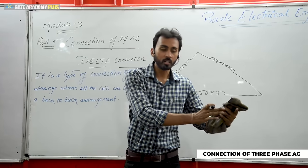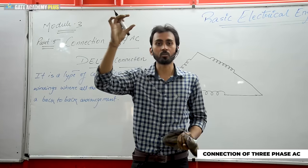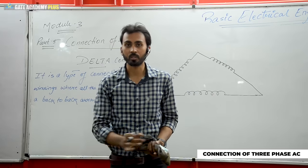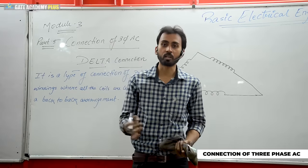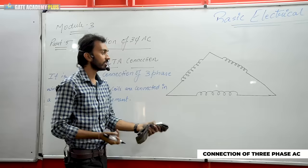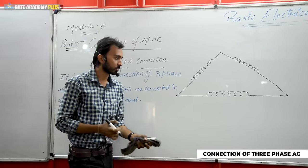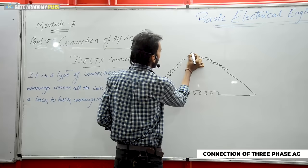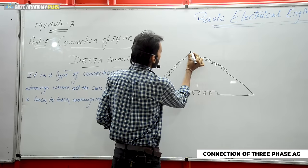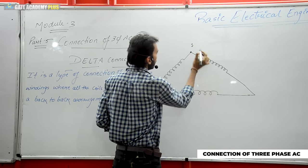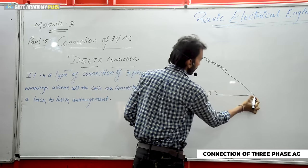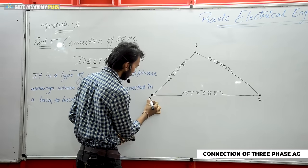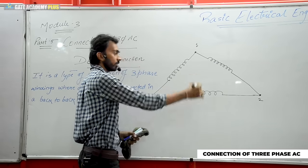Where the second set of conductors ends, the third set of conductors will start. And where the third set of conductors ends, the first conductor will start. There will be a chain process here. Any such kind of process is known as a back-to-back arrangement. This point is written as one, this point is expressed as point two, and I will write it as point three. I made a proper sequence.